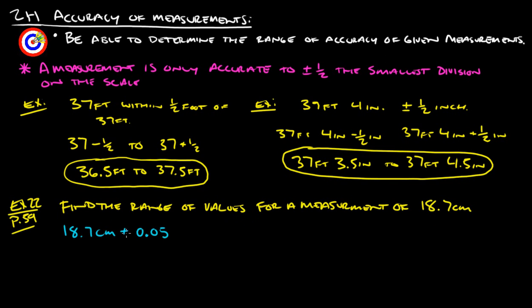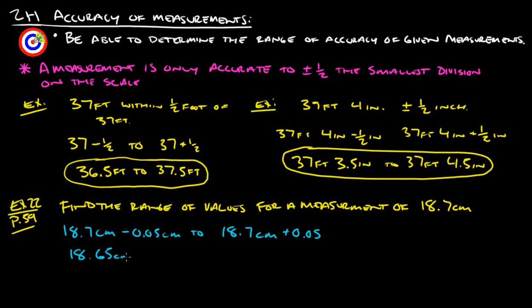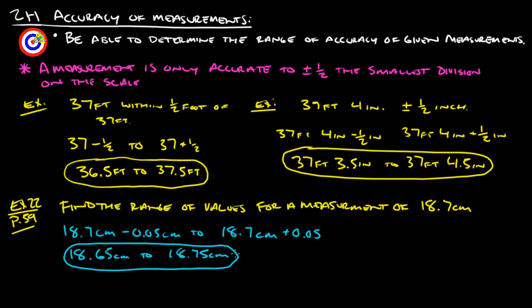First we subtract 0.05, then we take 18.7 and add 0.05. So you get 18.65 centimeters to 18.75 centimeters. That would be our accurate range.